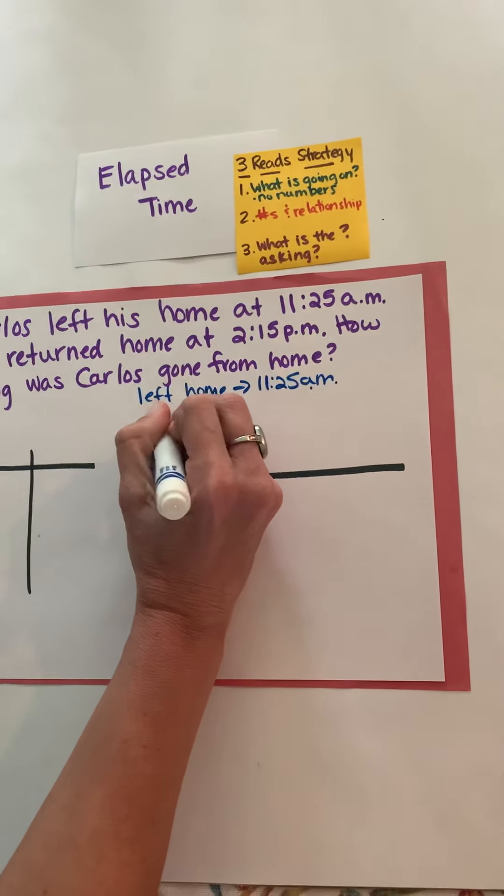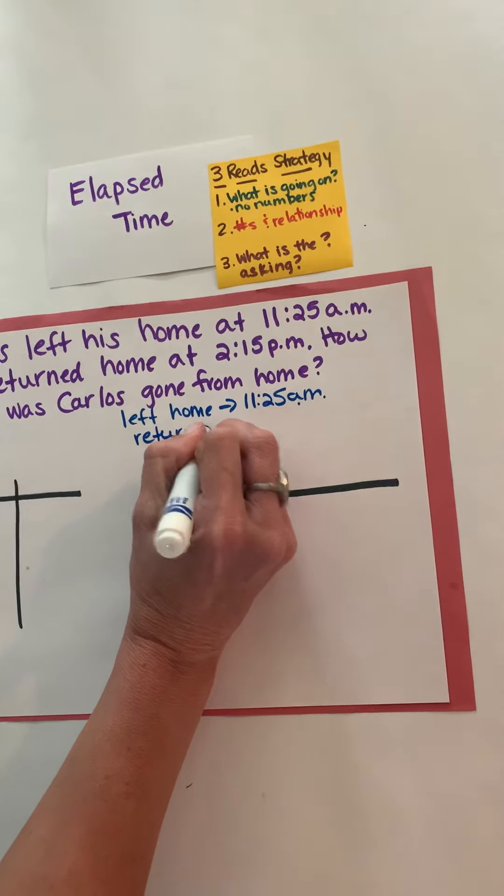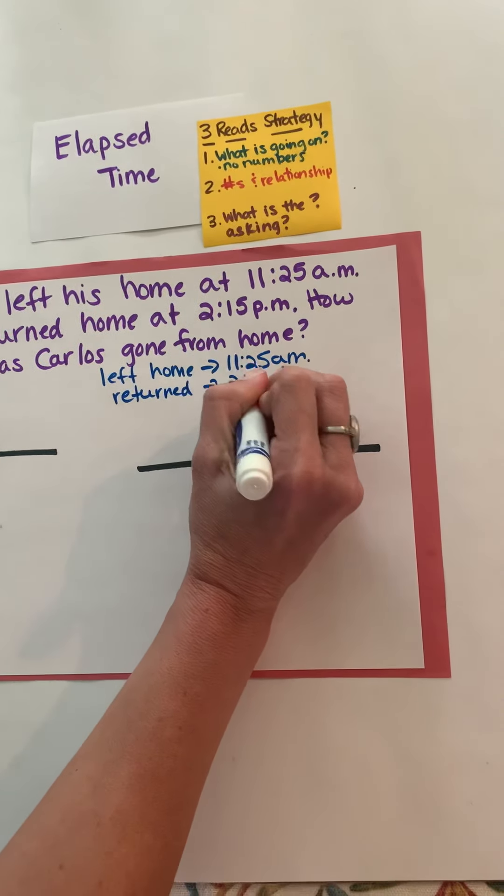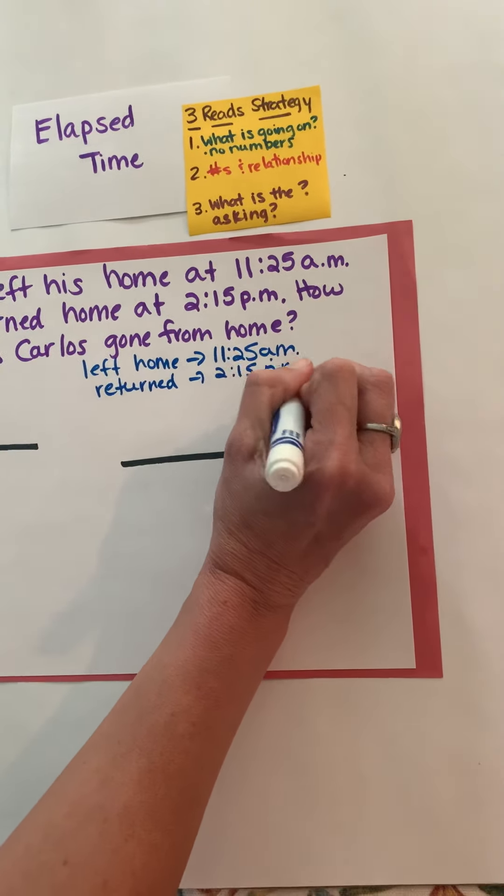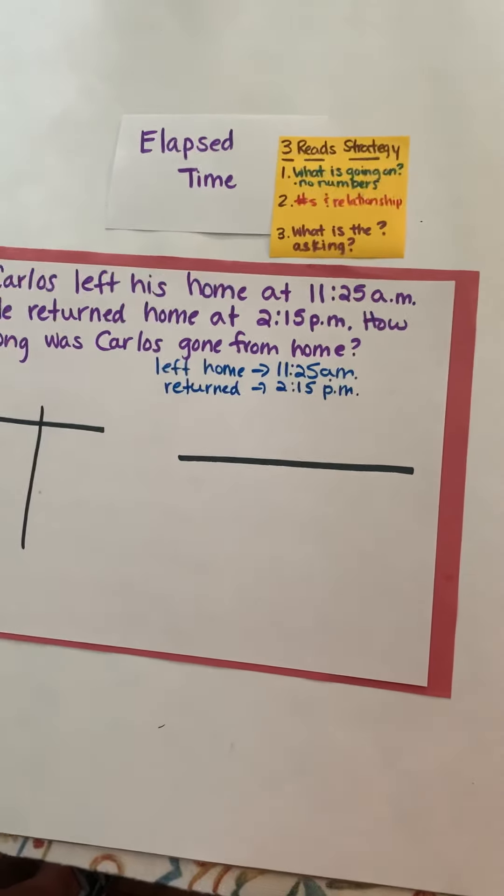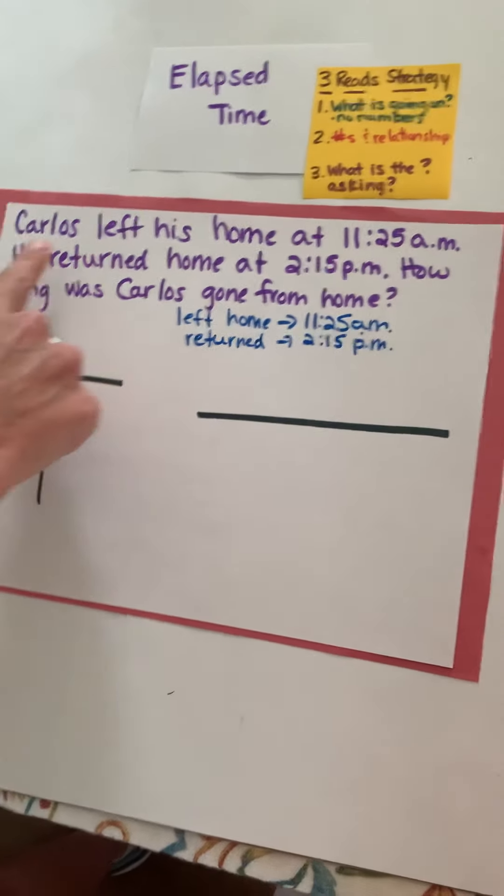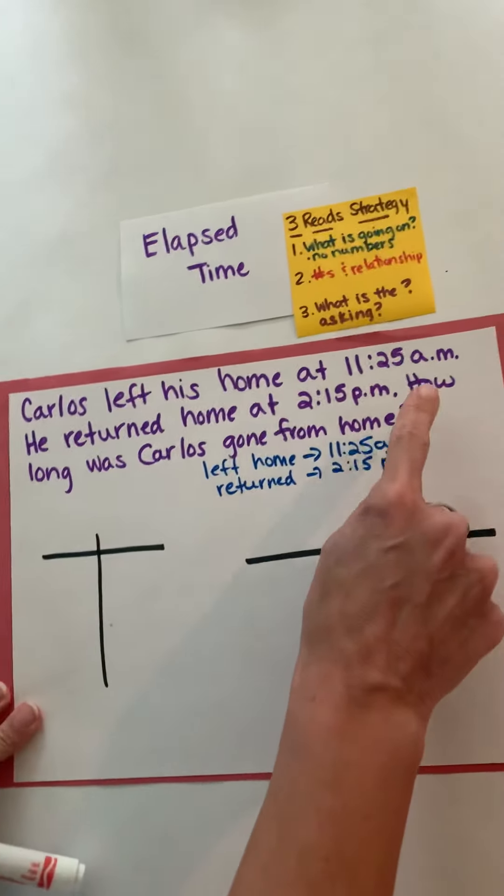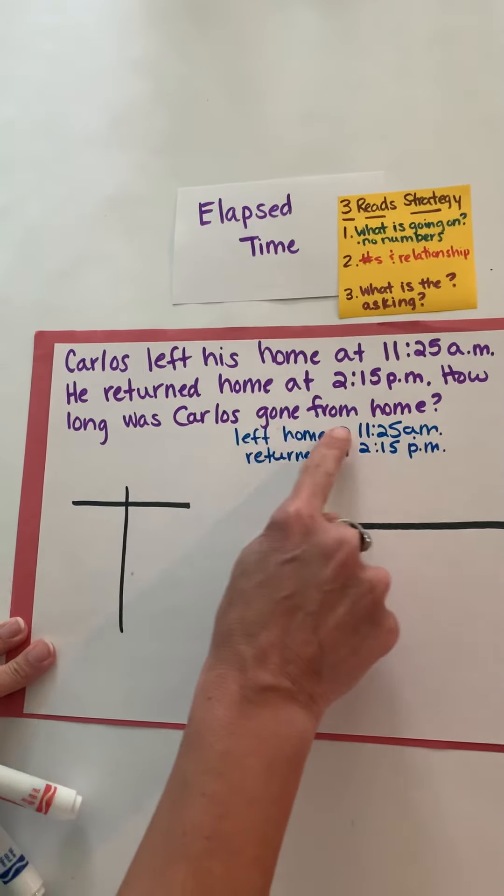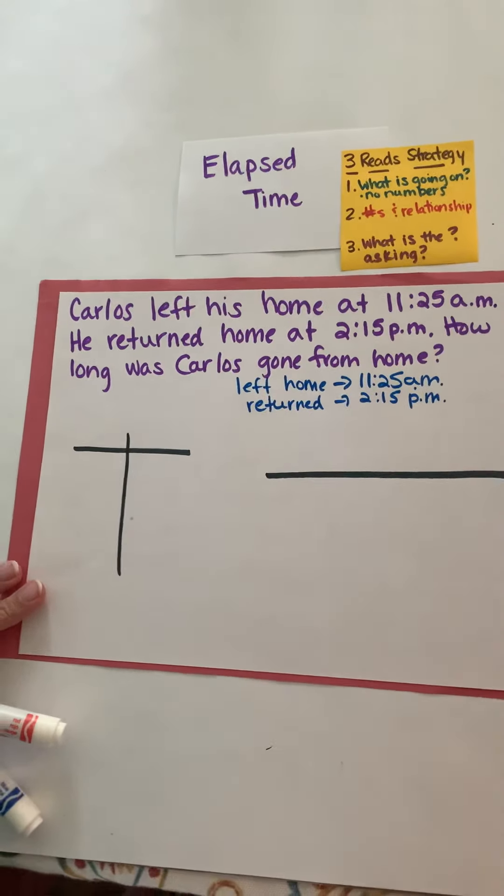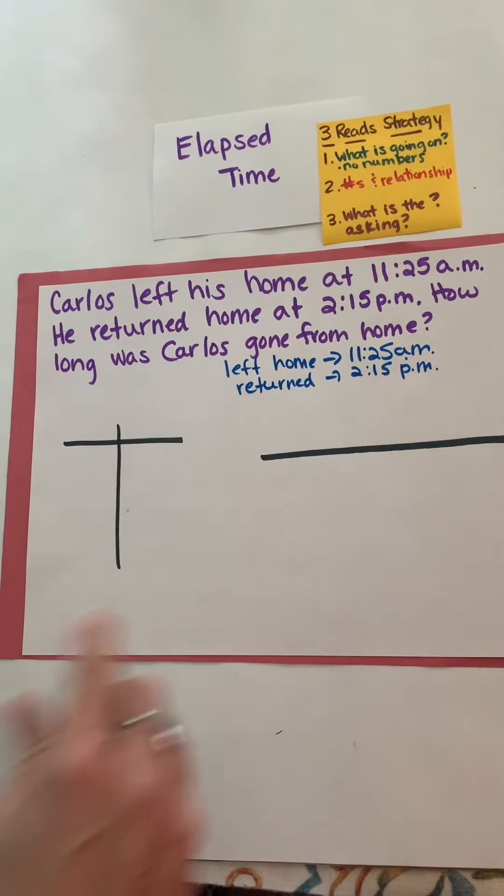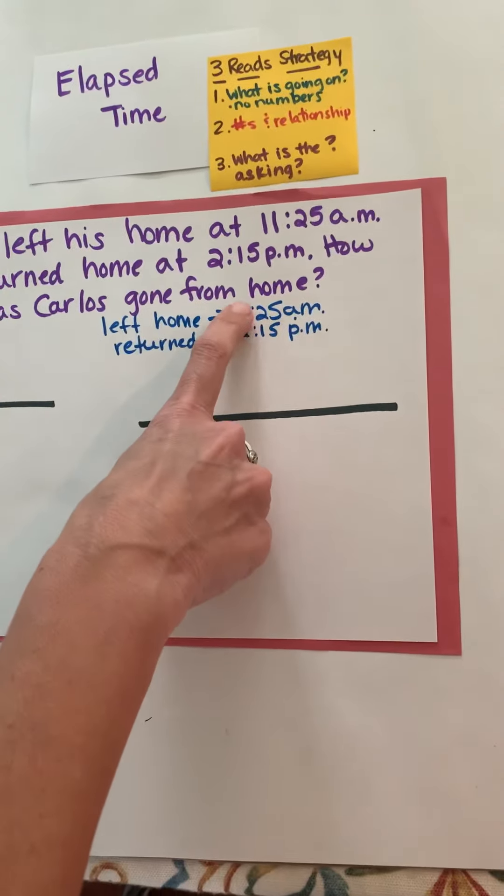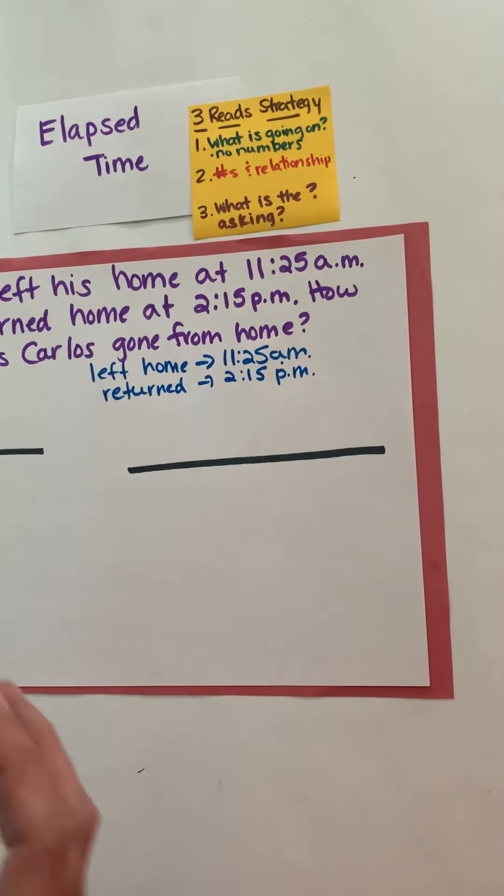Okay and finally I want to look at the question. Carlos left his home at 11:25 a.m., he returned home at 2:15 p.m. How long was Carlos gone from home? Well to determine how long he was gone from home I'm going to have to count up from 11:25 to 2:15 p.m. how much time had passed.